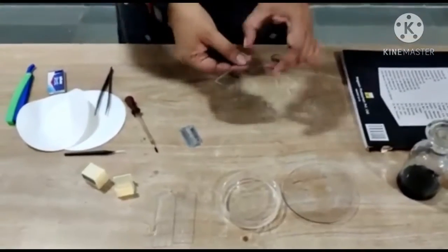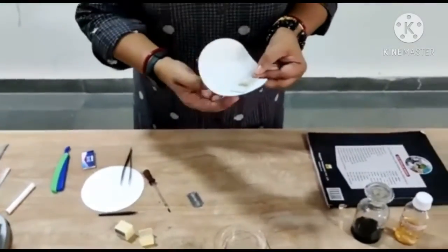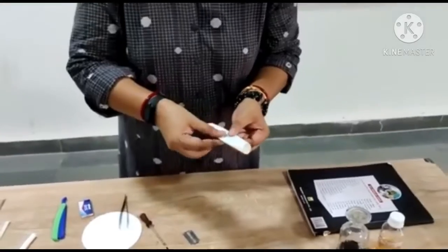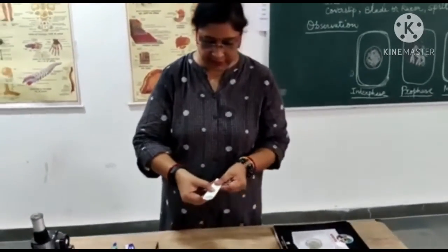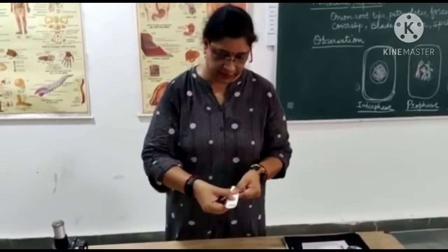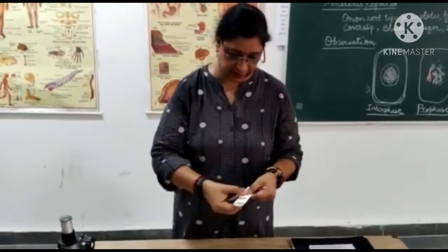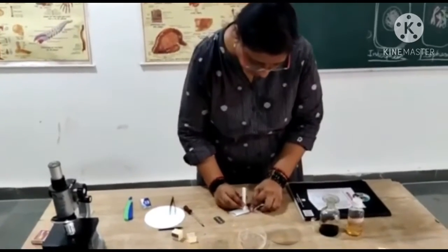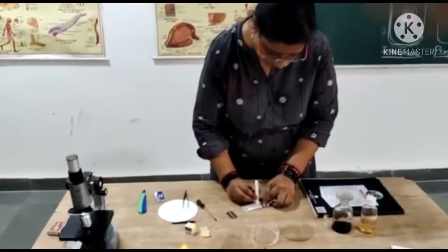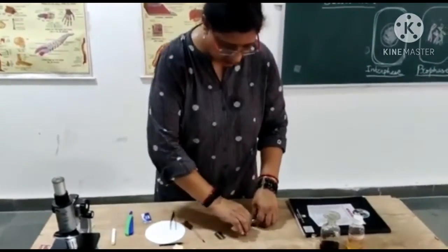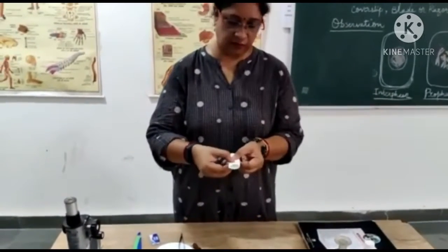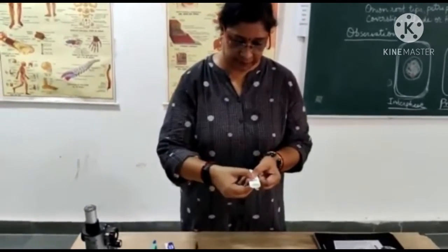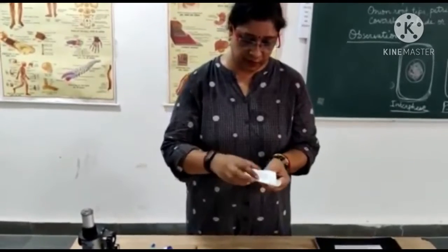After putting the stain and cover slip, we will wrap the slide in filter paper. And where the material is, we will need to pressurize very gently just to spread the cells to make the smear. You can tap it with some blunt object. Until and unless the cells are spread completely, you cannot observe the slide properly.